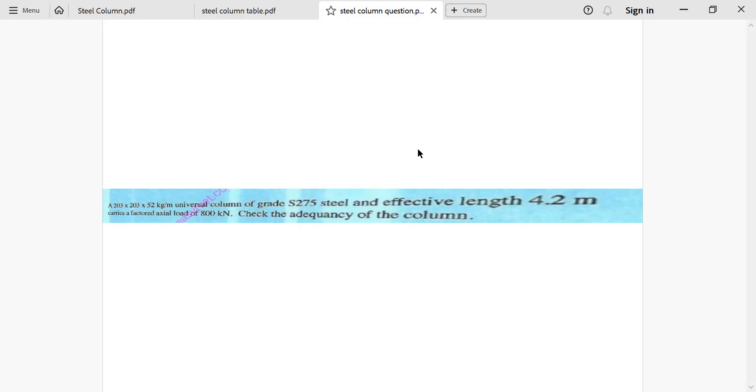Let's read. 203 by 203 by 52 kilogram per meter universal column of grade S275 steel and effective length 4.2 meter carries a factored axial load of 800 kilonewton. Check the adequacy of the column.